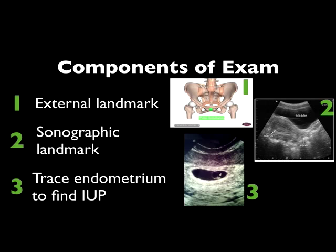Let's start with transabdominal scans. The main component is to first identify the external landmark, which is the pubic symphysis. It's important to put the ultrasound transducer right above the pubic symphysis and not too high up on the abdomen because you won't be able to visualize the uterus. It's also important to angle the ultrasound transducer into the pelvis rather than keeping it parallel to the axial plane. Finally, we're going to find the bladder, which will be anterior to the uterus.